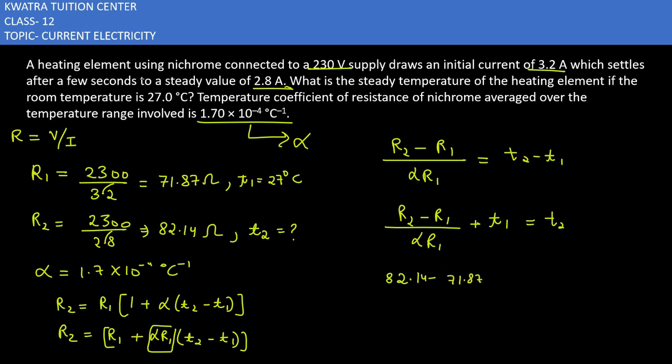Now to find T2, first solve the bracket by subtracting the two numbers, then multiply by the values. Finally you will solve this: 840.56 plus 27, add it to get 867.56.